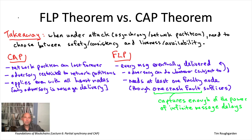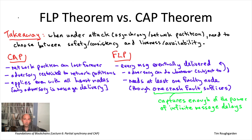That concludes lecture six, where we introduced the partially synchronous model — maybe the most important model for the discussion of blockchain protocols. We showed the fundamental limitations of what you can hope to achieve in the partially synchronous model, and learned where the magical 33% threshold you see in various protocol white papers comes from. We then related that to the lessons of the CAP theorem. The next order of business is to prove a matching positive result — showing that protocols do exist that, as long as less than a third of nodes are Byzantine, can solve Byzantine agreement or state machine replication in the partially synchronous model. We'll prove that positive result in lecture seven using an actual real blockchain protocol known as the Tendermint protocol, which is the basis of blockchains like Cosmos and Terra.